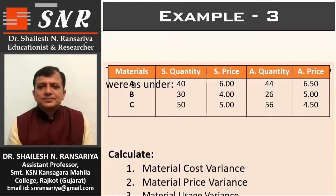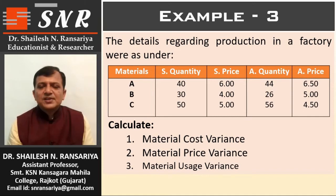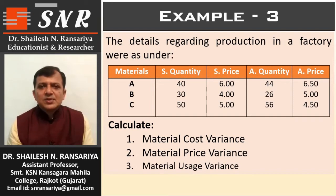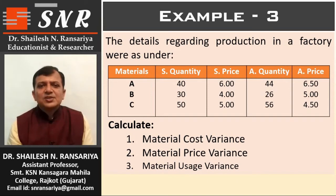Example number 3. The details regarding production in a factory are as under. Materials A, B, C have standard quantities 40, 30, and 50; standard prices 6, 4, and 5; actual quantities 44, 26, and 56; and actual prices 6.5, 5, and 4.5. Calculate material cost variance, material price variance, and material usage variance. In this example, more than one type of material is available, so we will calculate MCV for each individual material, make the total, and then get the total MCV. Same for MPV and MUV.